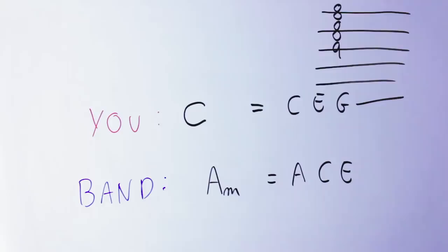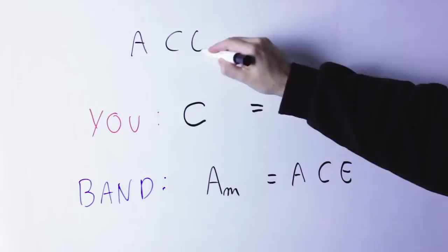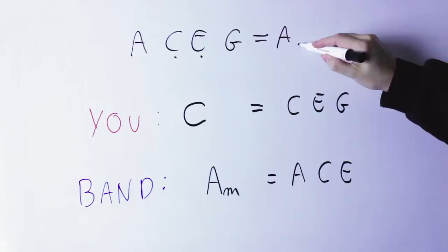Now the C major chord and the A minor chord work together. Now the listener is hearing all the notes from the A minor arpeggio A C E and all the notes from the C major arpeggio I'm playing which are C E G, so in total they are hearing the notes A C E G and those are the notes in an A minor seventh chord.